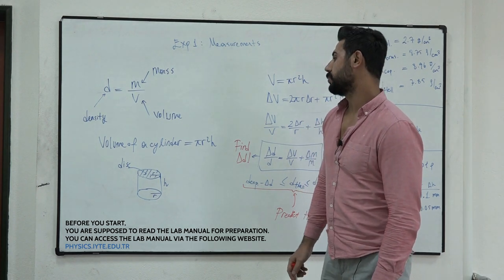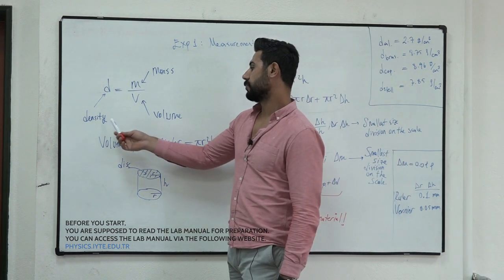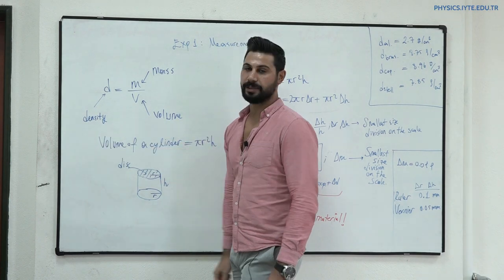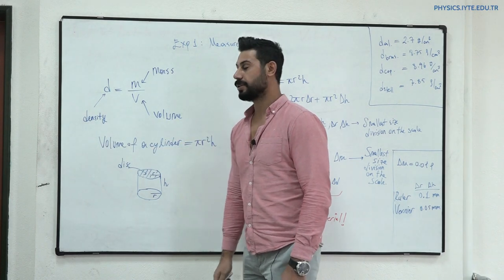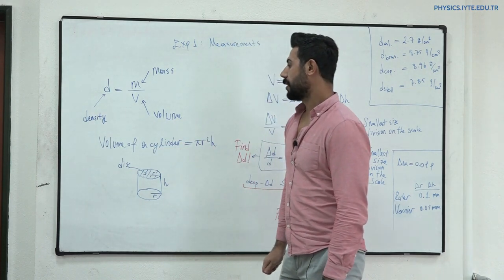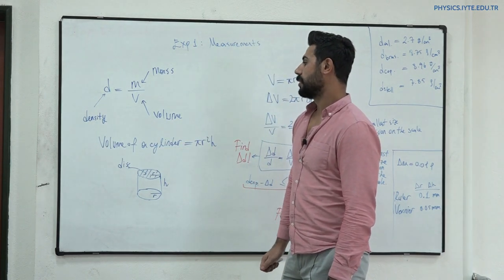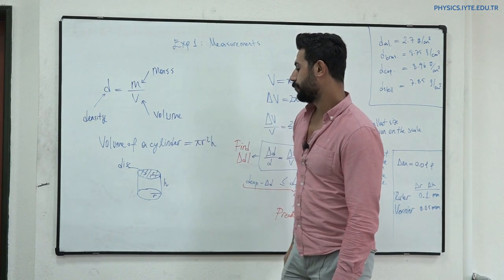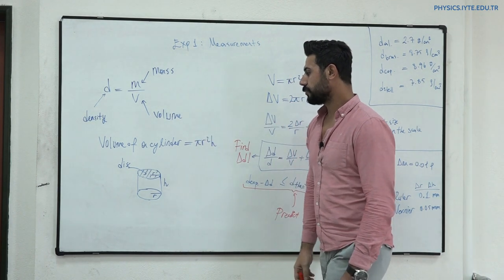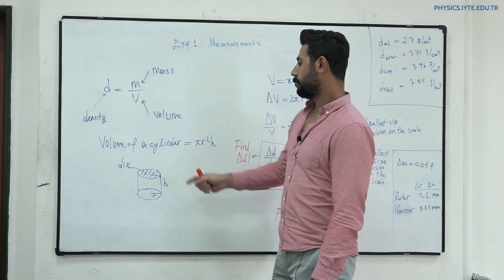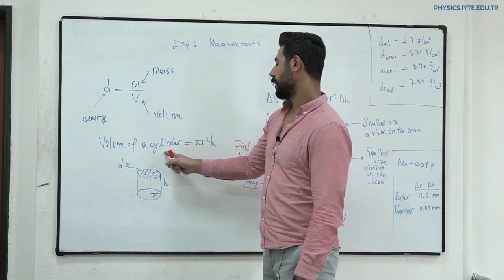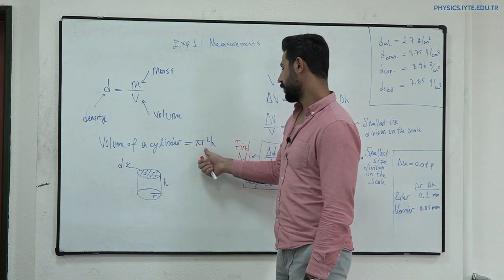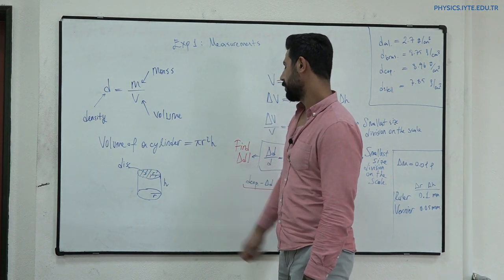To do this, we have to calculate the density of the material with the help of mass and volume. As you know, the volume of a cylinder is given by π R squared H.